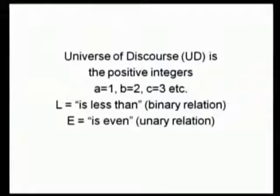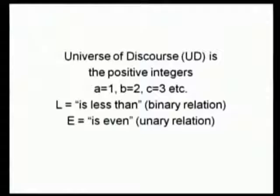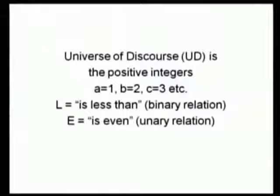Here, let's specify that the universe of discourse is the positive integers. Capital L will be a binary relation — a binary predicate — meaning 'is less than.' Since it's a binary predicate, you should expect to see two names after it, and 'is less than' should be read as 'the first variable is less than the second variable.' The other predicate is E, the unary relation 'is even.'